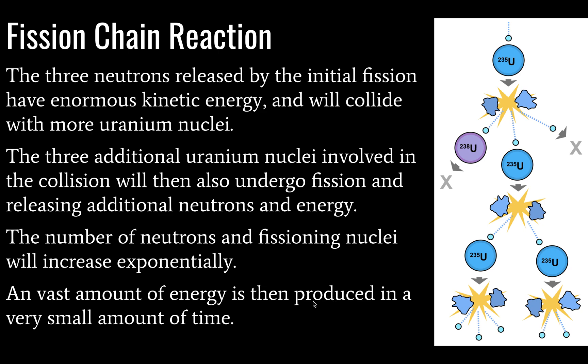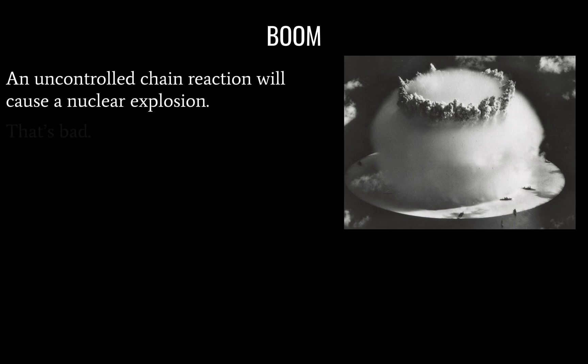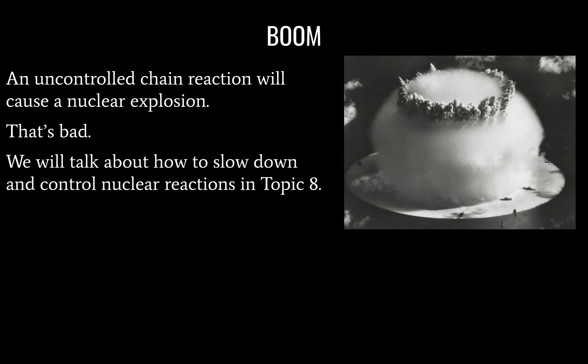What we then get is this huge amount of energy being produced every single time. And some of the energy involved in this interaction is going into the kinetic energy of the neutrons. So the product of a chain reaction, if that chain reaction is not controlled, is going to be a nuclear explosion. And that is not good, as you can imagine.